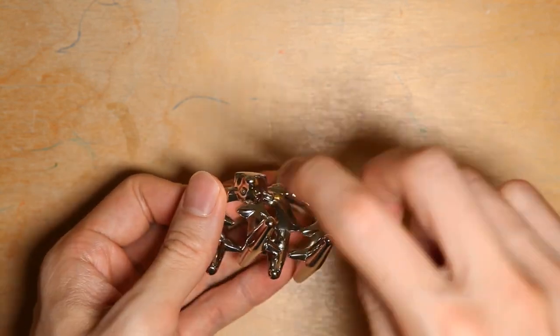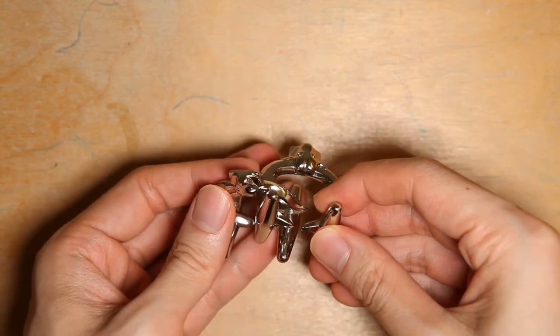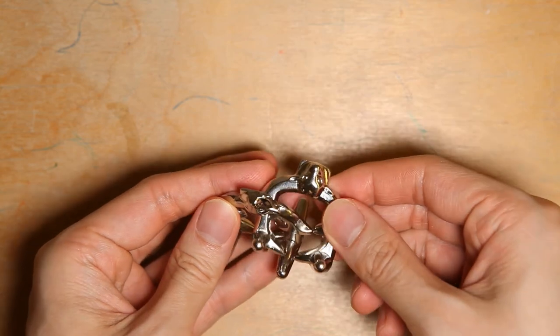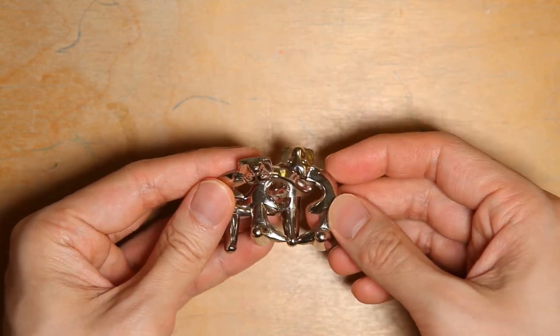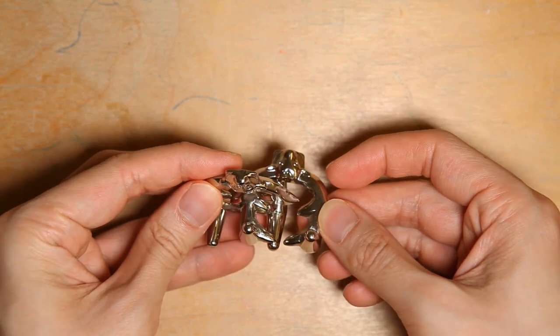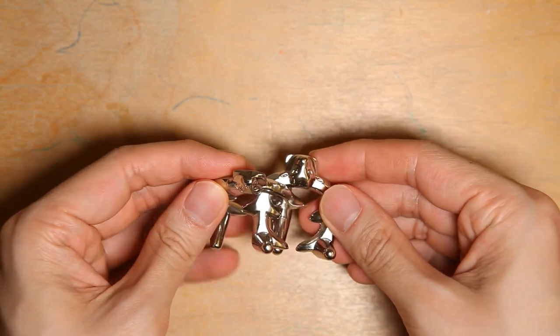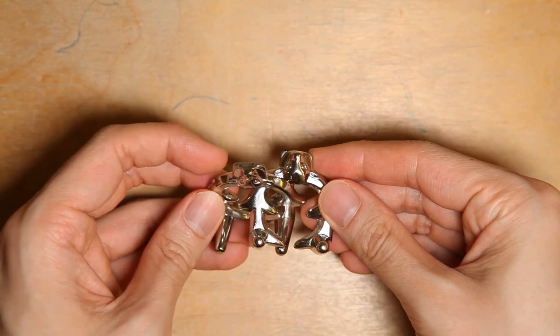And with this, this is the Hanayama piece and on the right is the NOB piece. So with this, you can just follow how I solved this puzzle.